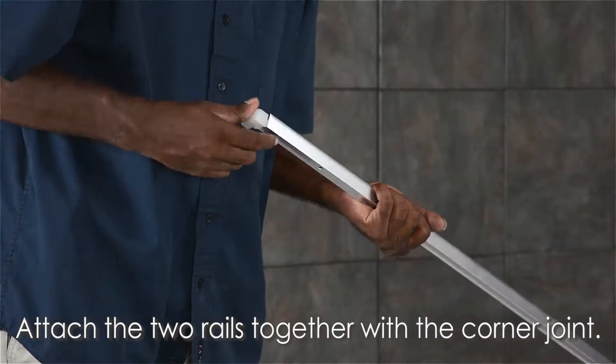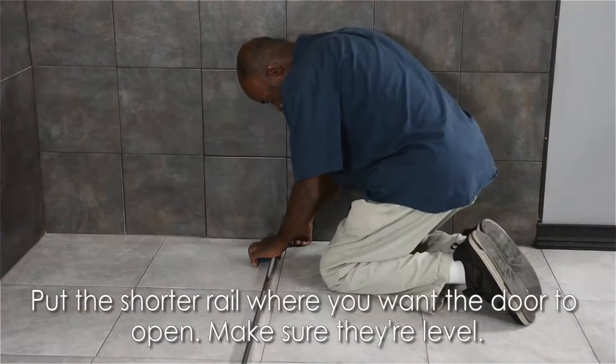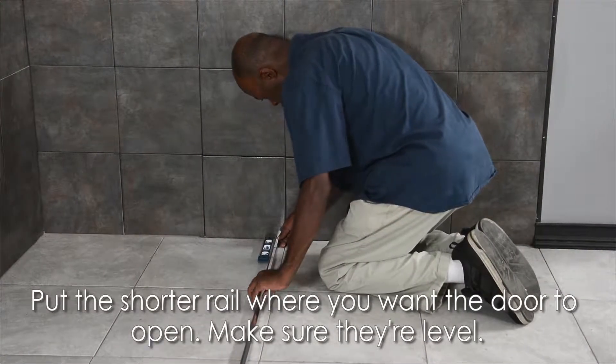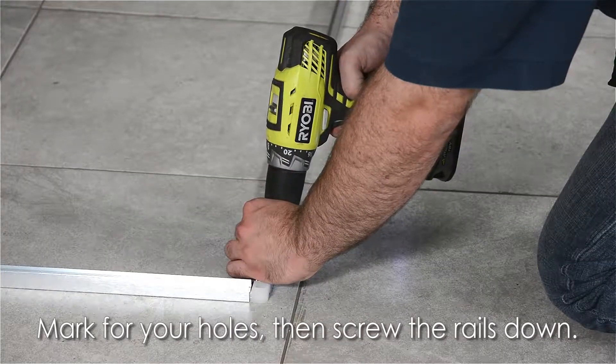Attach the rails together tightly using the corner joint. Lay the rails square and firmly against both walls. Put the shorter rail where you want the door to open. Make sure they're level. Mark for your holes and then screw the rails down.